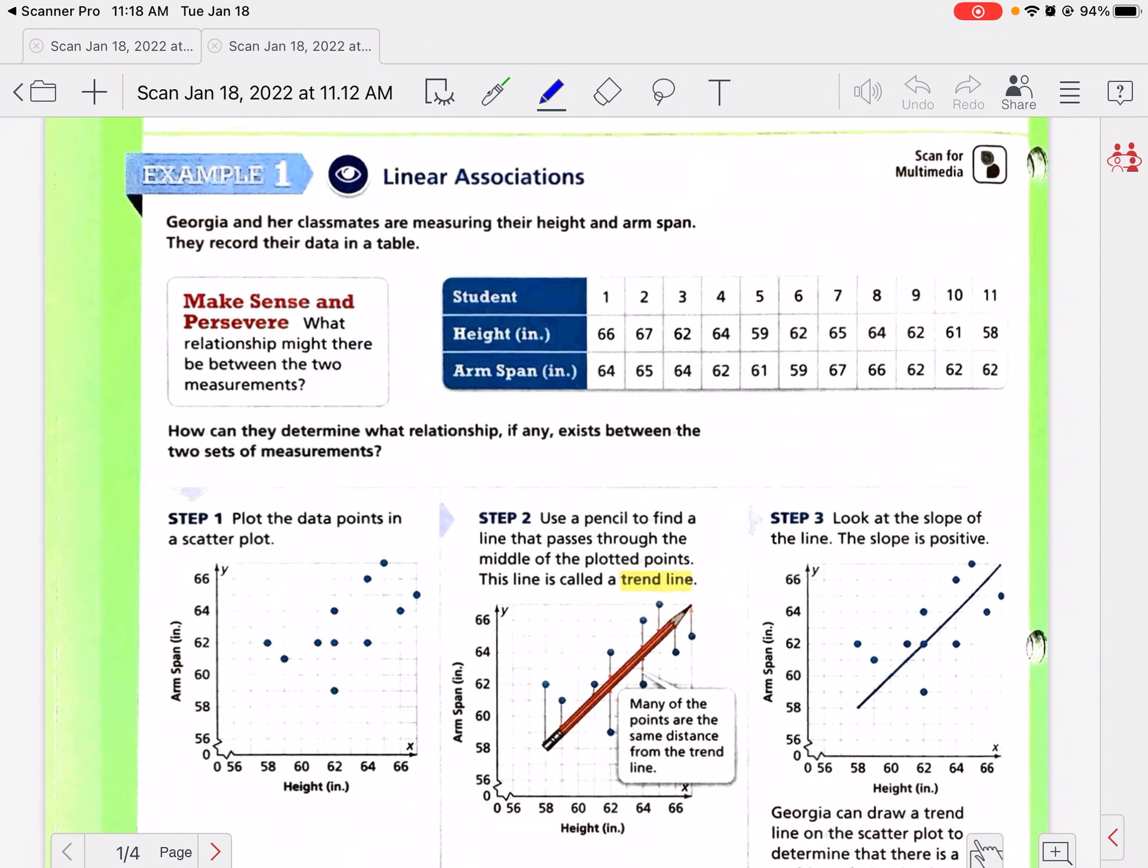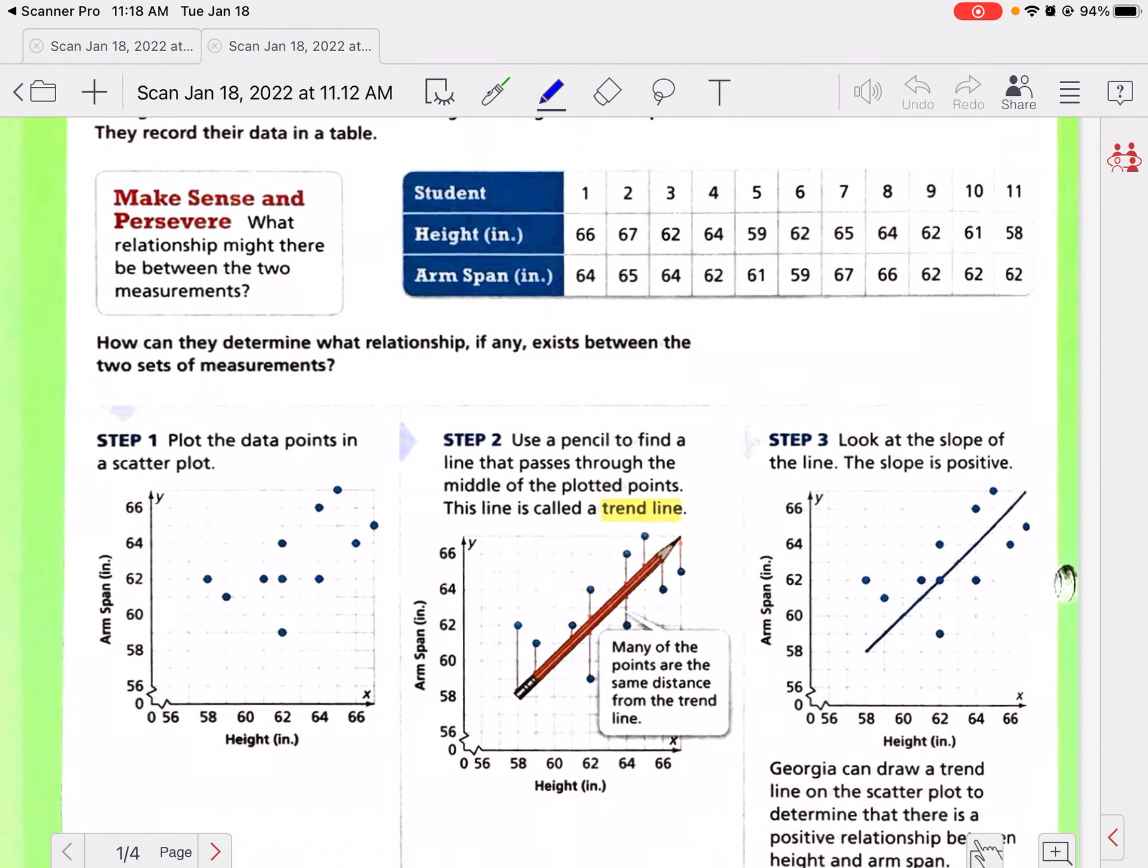Remember we talked about scatter plots on Monday, and a scatter plot is just a graph of data that has a lot of data points. Some of those data points are really close together, some of them are really far apart. Georgia and her classmates are measuring their height and arm span. They record their data in a table. How can they determine what relationship, if any, exists between the two sets of measurements?